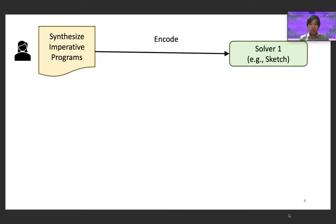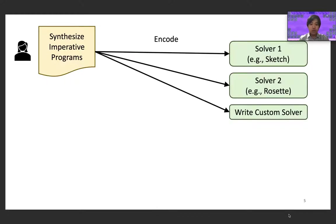To see this, let's consider a hypothetical scenario in which Alice is trying to synthesize an imperative program. Alice would have a few options. For example, one option is to encode her problem in a general program synthesizer like Sketch. However, if that doesn't work well—which is very possible since program synthesizers tend to have unpredictable behavior—another option is to try another general synthesizer like Rosette, or write her own synthesizer for synthesizing imperative programs.